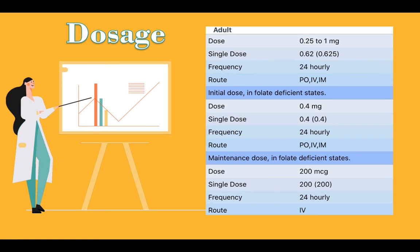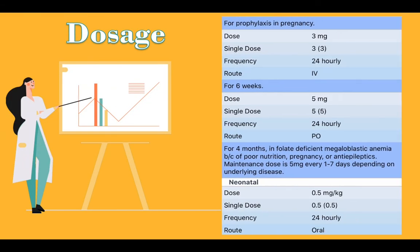Maintenance dose in folate deficient states: dose 200 mcg. Single dose: 200. Frequency: 24 hourly. Route: IV. For prophylaxis in pregnancy: dose 3 mg. Single dose: 3. Frequency: 24 hourly. Route: IV, for 6 weeks. Dose 5 mg. Single dose: 5. Frequency: 24 hourly. Route: oral. For 4 months in folate deficient megaloblastic anemia due to poor nutrition, pregnancy, or anti-epileptics. The maintenance dose is 5 mg every 1 to 7 days depending on the underlying disease.